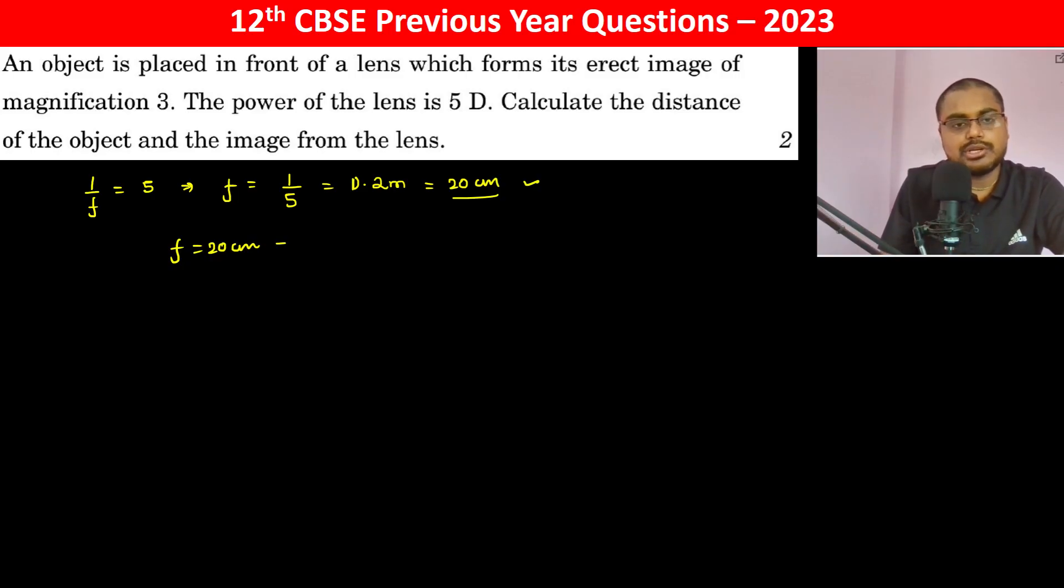Now the magnification is 3, and it is virtual and erect. So we can write magnification equals 3, which equals height of image divided by height of object, which equals v by u. Therefore v equals 3u.